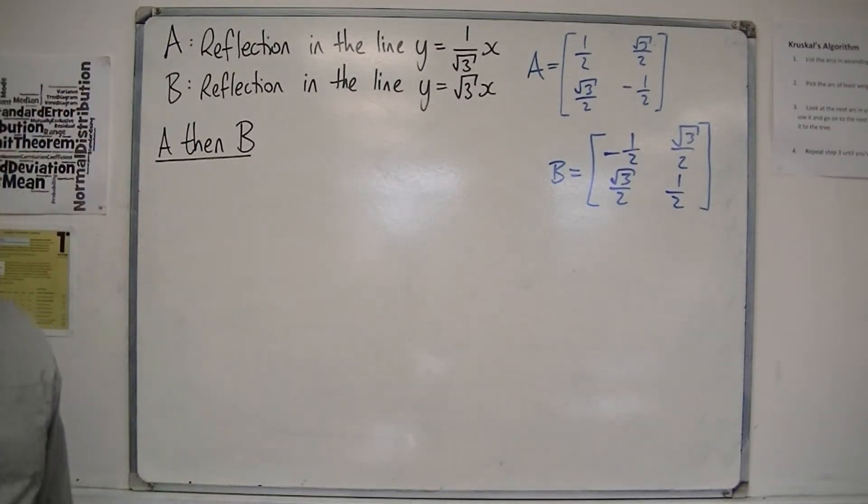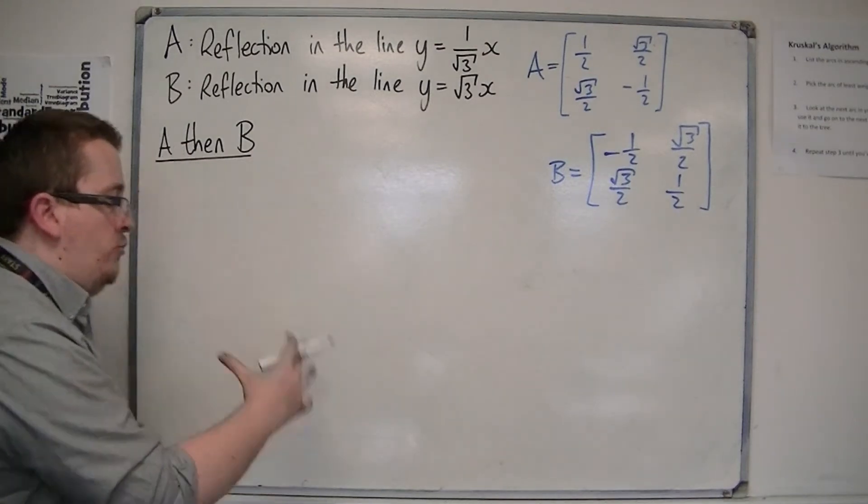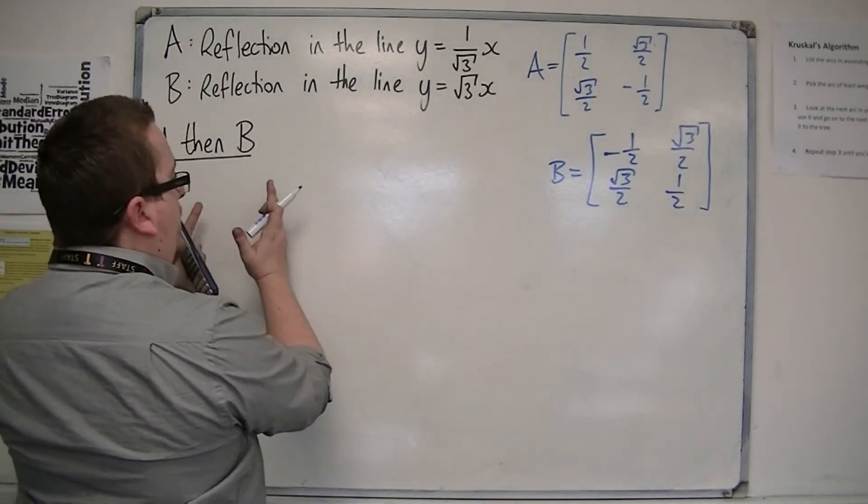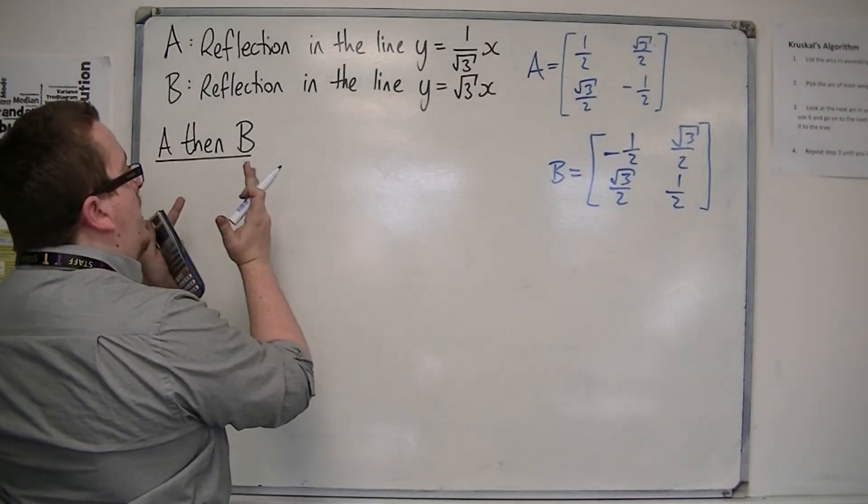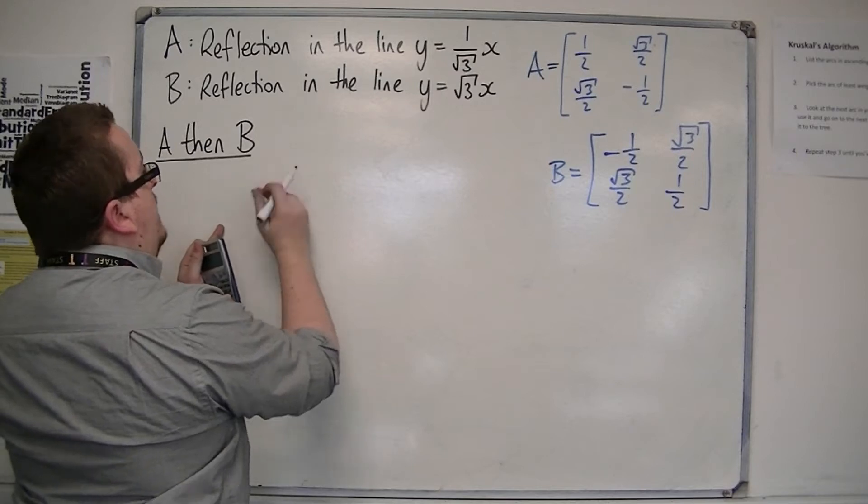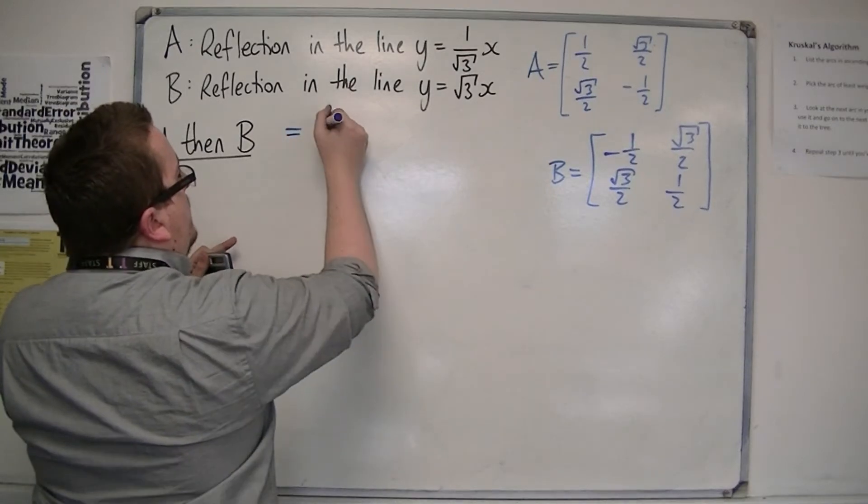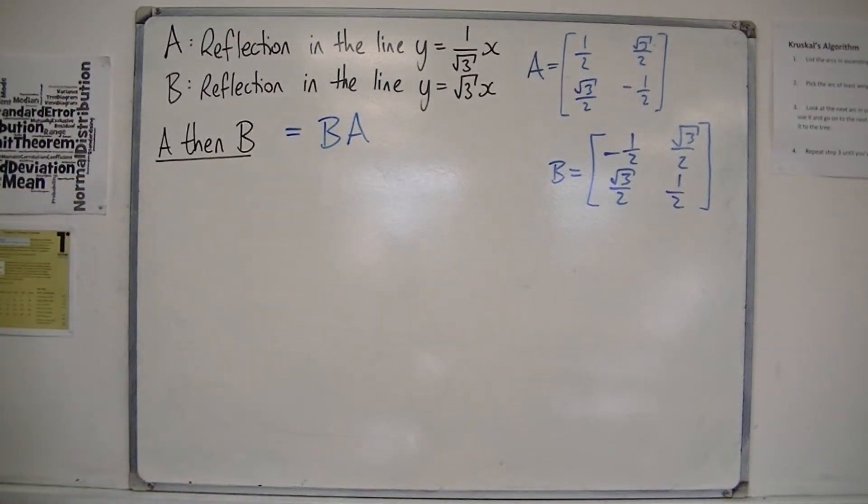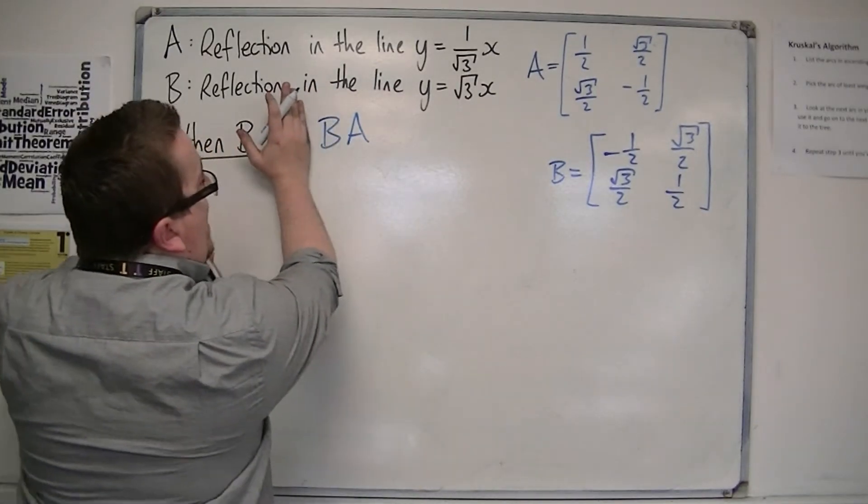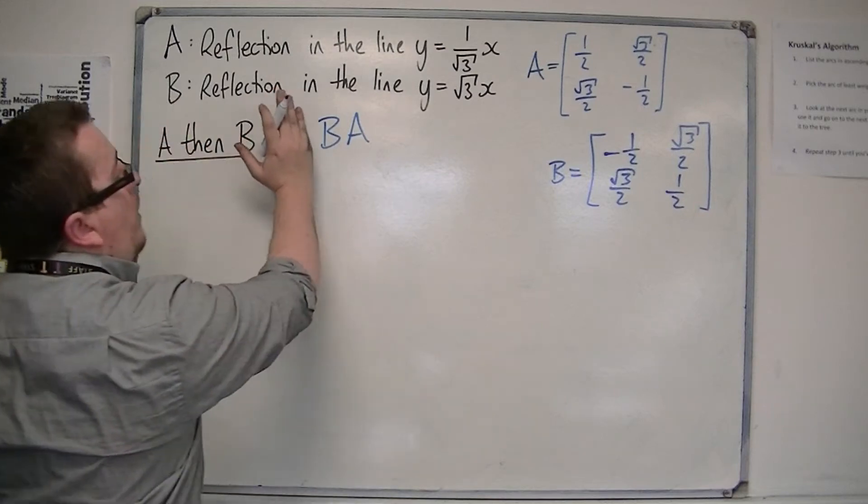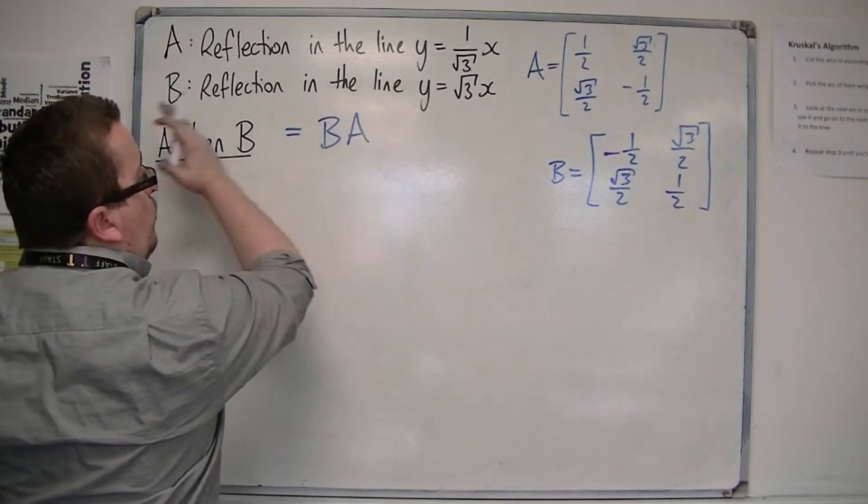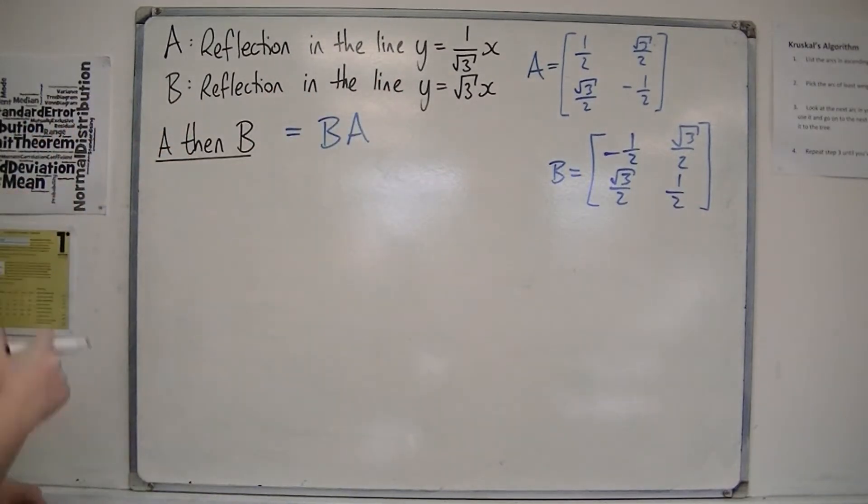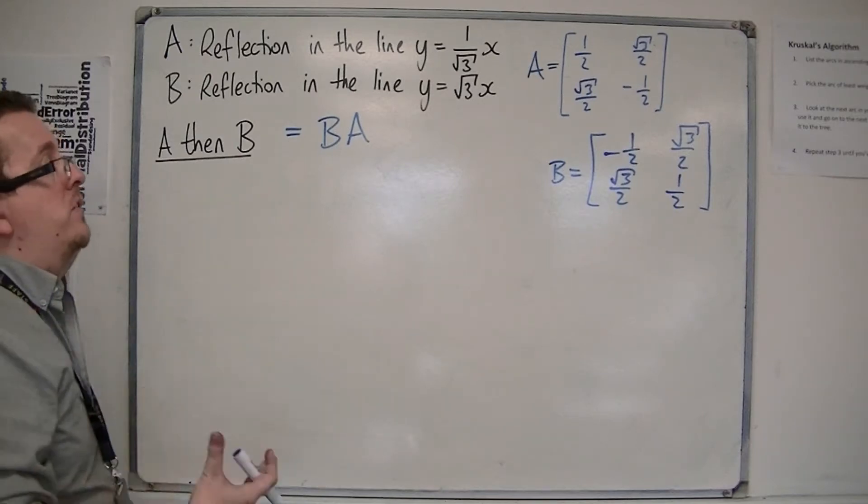Now, if we want to perform A, then B, remember that your matrices work so that they're on the left-hand side. If you want A, then B, this is actually B, A. B multiplied by A. You do the A first and then the B. You work from the right, working left. It's important to get that round the right way.